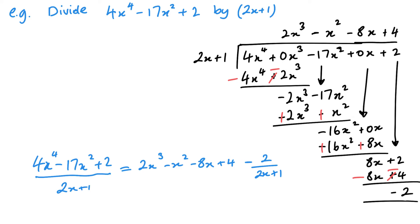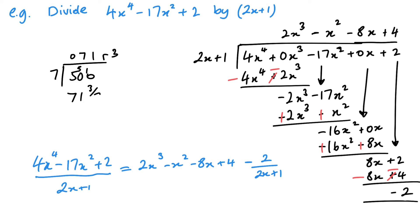That's how my remainder would look — very much like numerical long division. For example, 500 divided by 7: 7 into 5 goes 0, carry the 5; 7 into 50 goes 7, carry the 1; 7 into 10 goes 1 remainder 3. So 500 divided by 7 is 71 and 3 sevenths, which you can check on a calculator. That's how long division works.